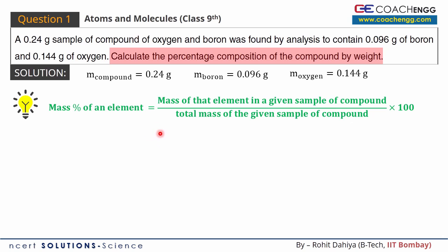So we have to find the mass percent of boron. The mass of boron is 0.096 grams, and the total sample is 0.24 grams, multiplied by 100. This is a simple calculation - you can see the answer will be 40%. So boron is 40% of your compound.